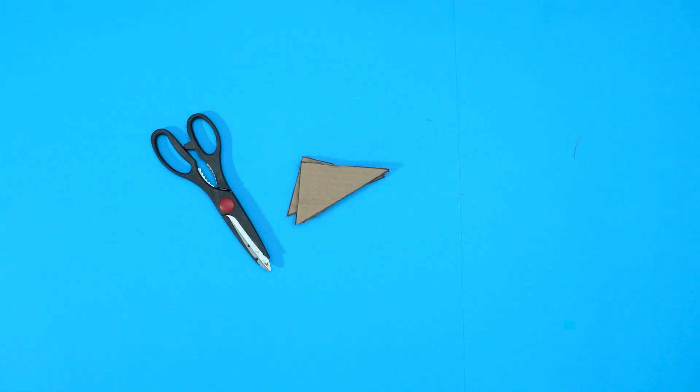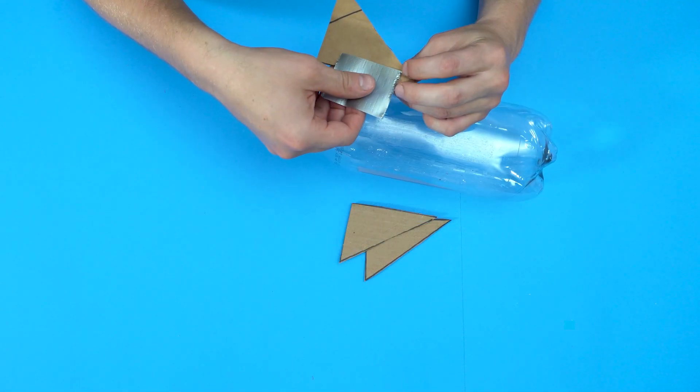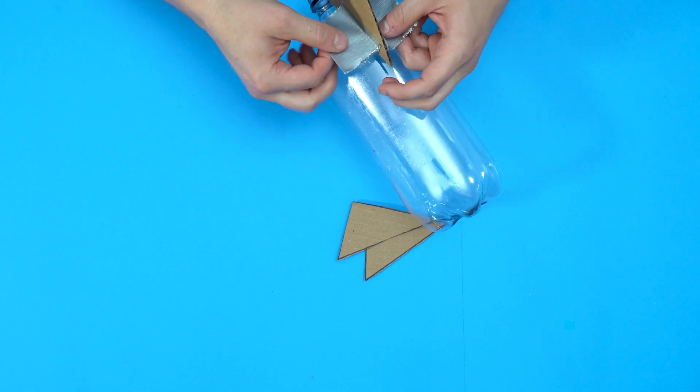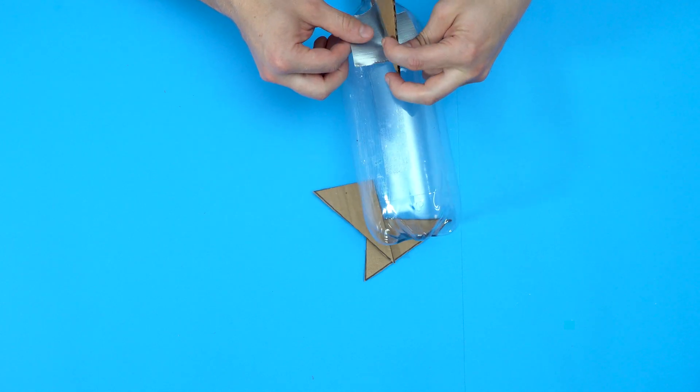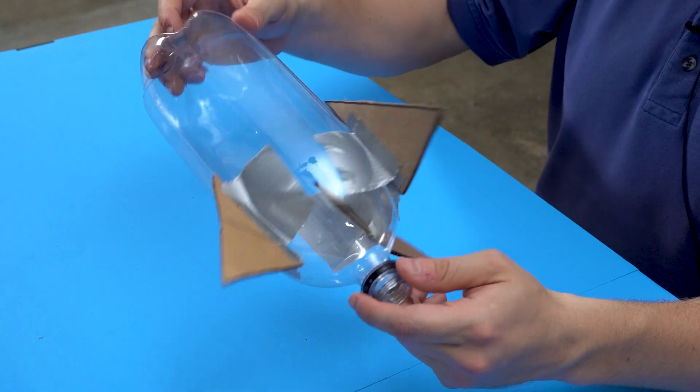And so after you are finished, you will have three fins ready to attach to your rocket. I'm simply going to put a piece of duct tape on each side of each fin, and then use that tape to hold it in place.